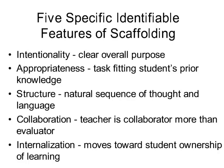Third, structure — there needs to be a natural, comprehensible sequence of thought and language in the scaffolding support. Fourth, collaboration — the teacher is more of a collaborator than an evaluator. Fifth, internalization — the process moves toward student ownership of the learning. With fading, the student becomes the owner of the knowledge, able to do it without any support, and that is always the end-state goal of scaffolding, teaching, and learning.